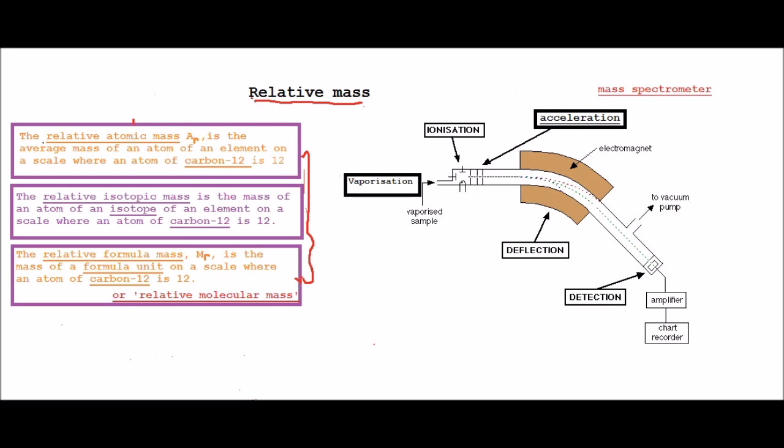So first we have the relative atomic mass, or you can write that as AR, not to be confused with anything else or argon. This is the average mass of an atom of an element on a scale where an atom of carbon-12 is 12.